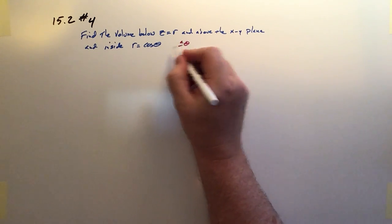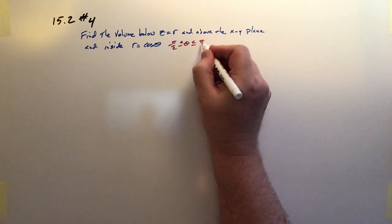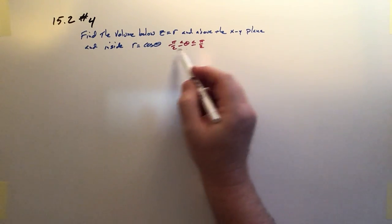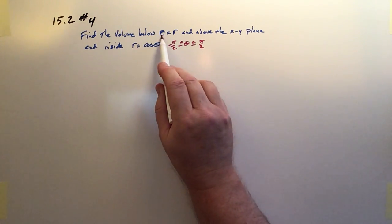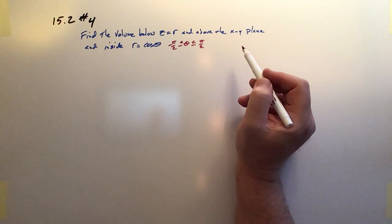So theta is limited by negative pi over 2 and pi over 2. That will guarantee that all of the returns for r are positive, and that means all the returns for z are positive, and that's to satisfy this condition.